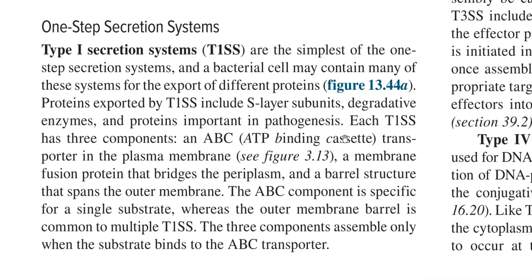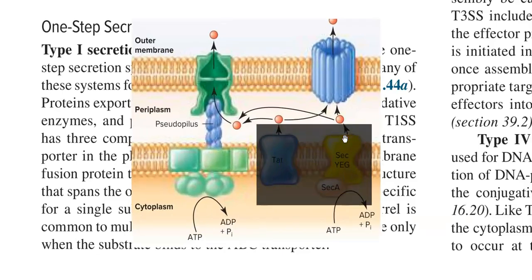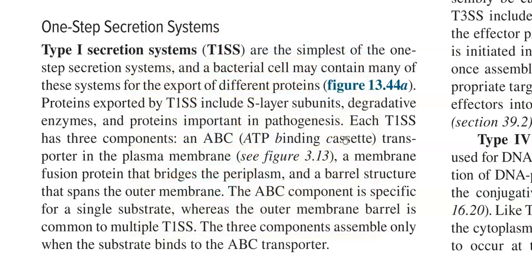Now we look at the details of the one-step secretion systems, where there is no involvement of the Sec or Tat translocator — secretion is effected directly by the systems. First, we look at the Type 1 secretion system, one of the simplest one-step secretion systems present in bacteria. Several types of Type 1 secretion systems exist to export different proteins produced in bacteria.